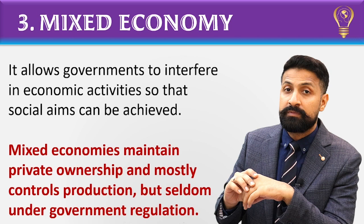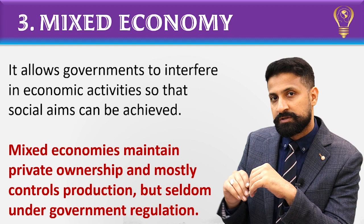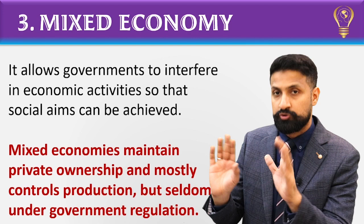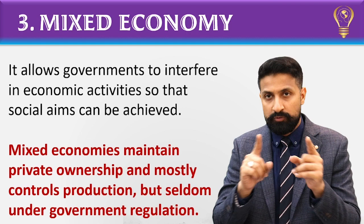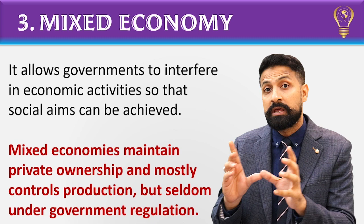The question here is: why does the government interfere and where does the market also interfere? The meaning of interference I explained is that the government intervenes — it takes some areas into its own hands, in some areas it maintains a check and balance, in some it gives support. But why does it do this? There must be a reason — so that social aims can be achieved. The question now is: what are the social aims of a government? Keep this word in mind; I will explain it further with pictures and definitions.